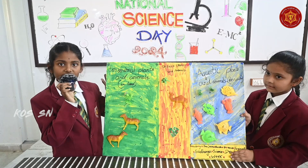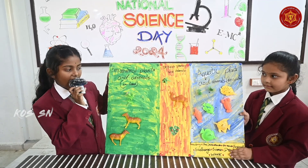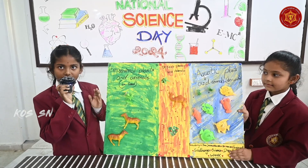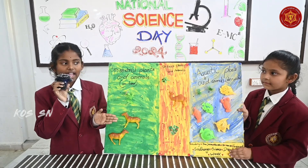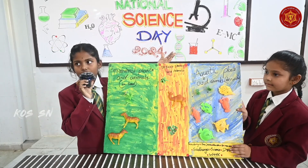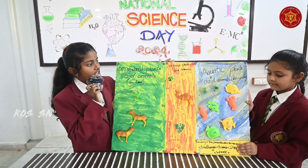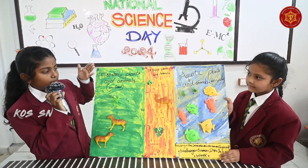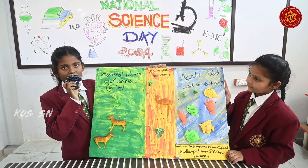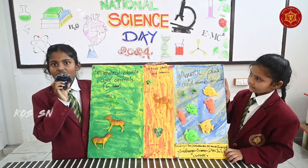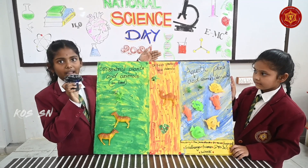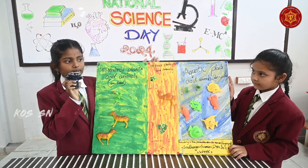Objects called terrestrial plants and animals — for example, grass, dog, cat. Now we are moving into desert plants and animals. Desert plants and animals are those living in the hot area; they are called desert plants and animals.